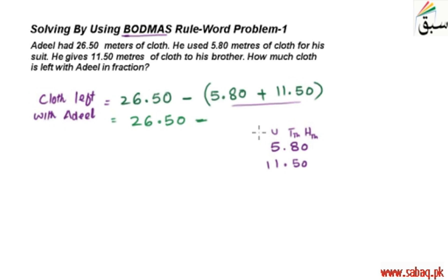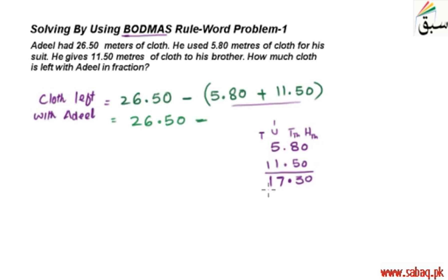We will add 5.80 and 11.50. Looking at the place values: this is the 100ths place, this is the units place, and this is the 10ths place. So here: 0 plus 0 is 0; 8 plus 5 is 13, carry 1; 5 plus 1 is 6, plus 1 carry is 7; and 1. So we get 17.30 meters.